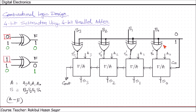Whenever we use the same circuit as an adder, we provide zero on the control line, and the carry in of the least significant bit is zero — which is always correct for normal addition. So this same circuit can be used as both a 4-bit parallel adder and a 4-bit subtractor.